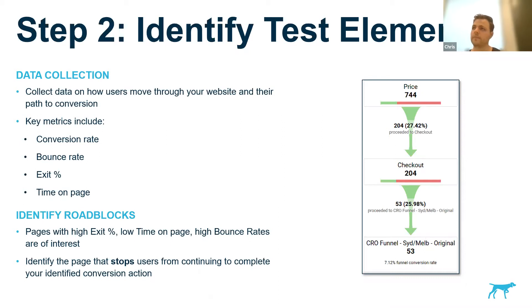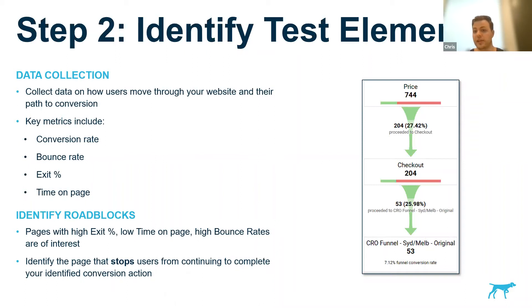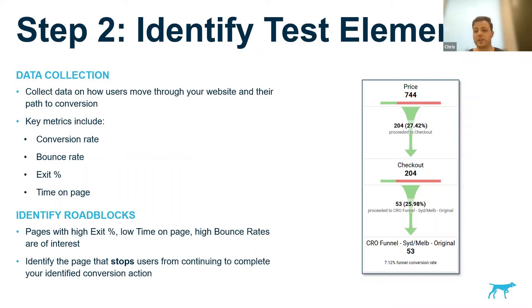In your experience, there are certain pages you always seem to test. For the most part, we look at high traffic, high volume pages — they get a lot of data through them, and they're often your key pages. Paid search landing pages are a great place to start because you're paying to send people to that page and there's high volume. A percentage increase will make a larger difference to your bottom line on a high volume page. If you start your test at the very end of the funnel, on your final checkout page, you're missing out on adding all those people originally into the funnel process.